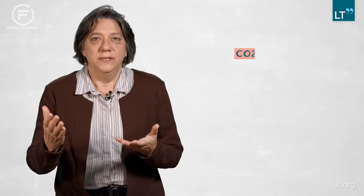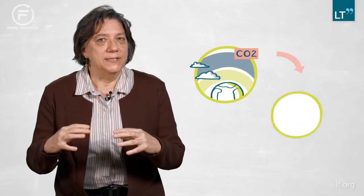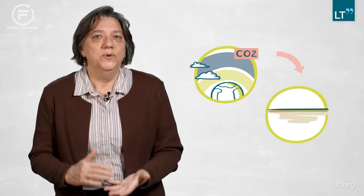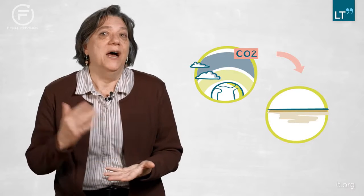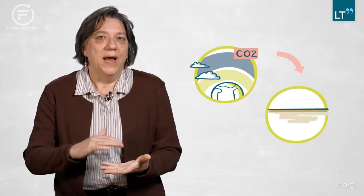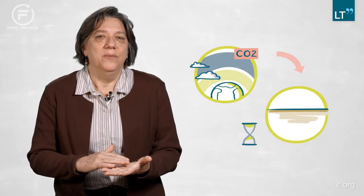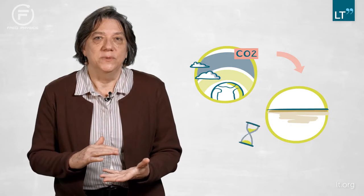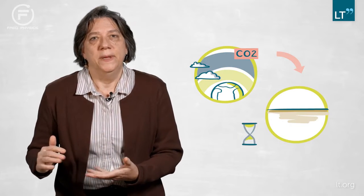So what I want to do is understand what those processes are. It's really important to know that the CO2 that plants take out of the atmosphere is removed and is not warming the planet. So how long can we count on terrestrial ecosystems to store it?